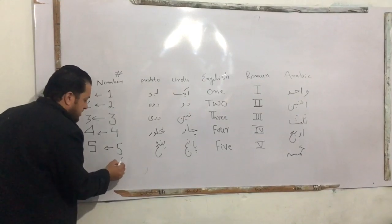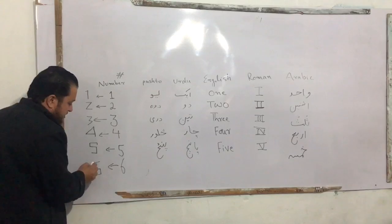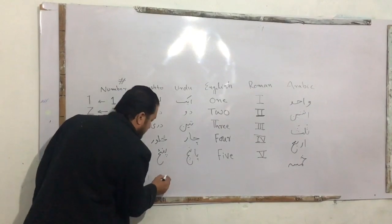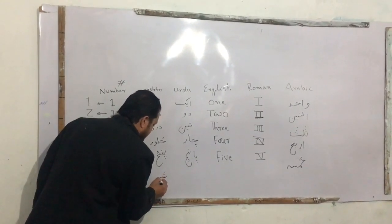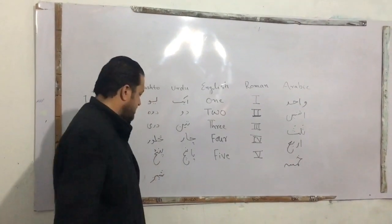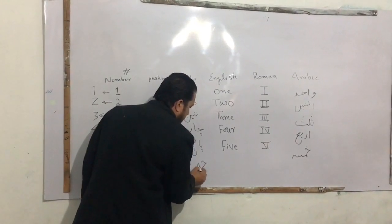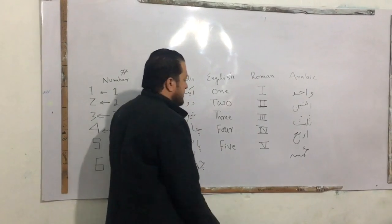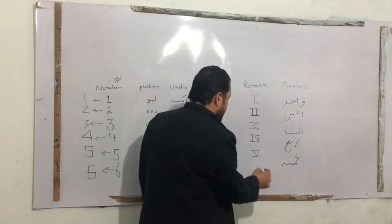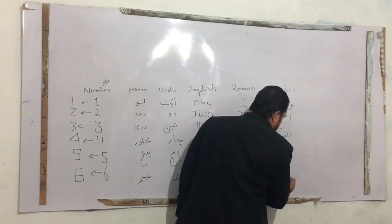If you have 7, it's 7. If you have 6, it's 6. This is 6 — in English, in Urdu, and in Arabic, the number 6 is represented the same way across all four numeral systems.